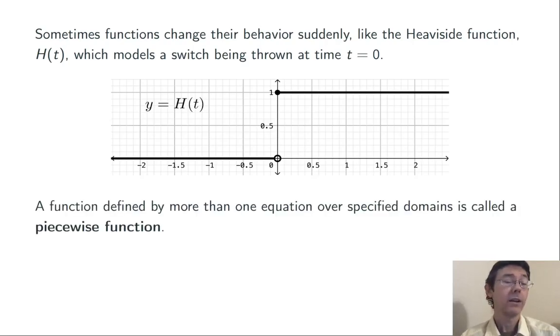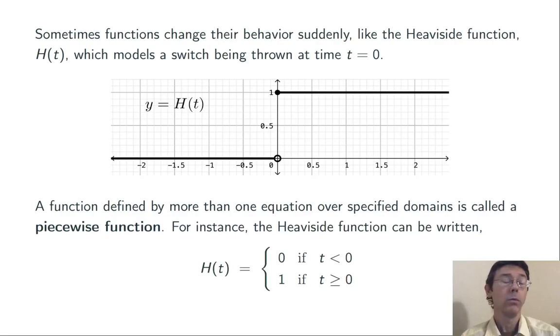A function defined by more than one equation over different domains is called a piecewise function. For example, we can write the Heaviside function like this with two different formulas on two different intervals. H of t is equal to zero if t is less than zero, and one if t is greater than or equal to zero. By the way, notice that those two intervals do not overlap, so every input has exactly one output.